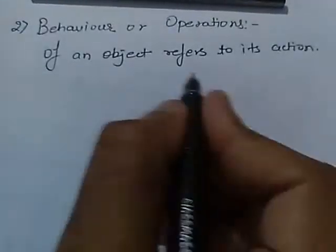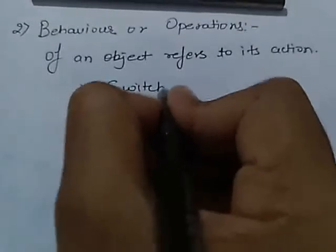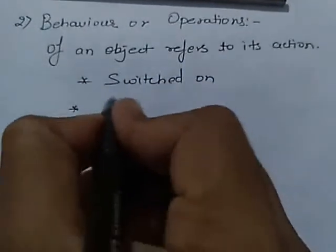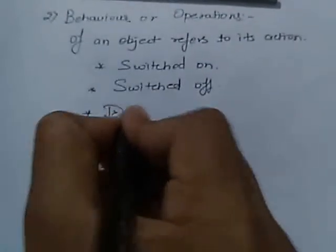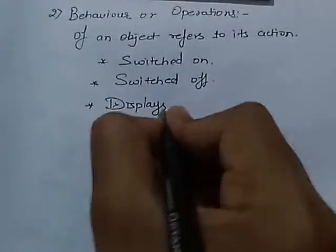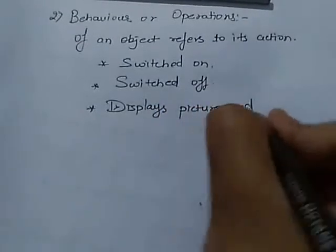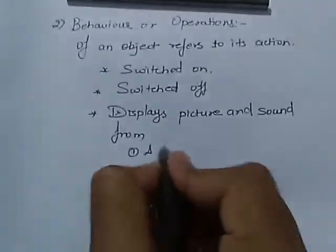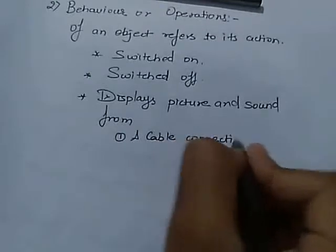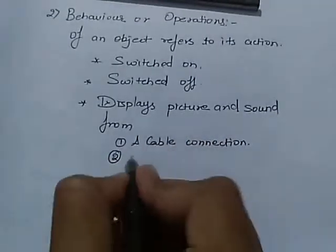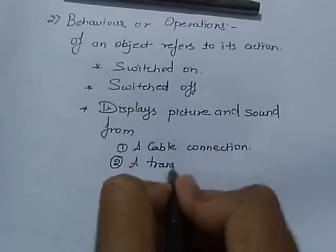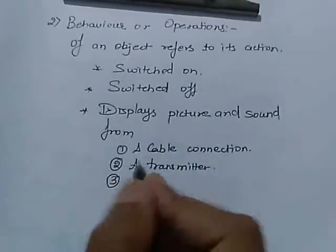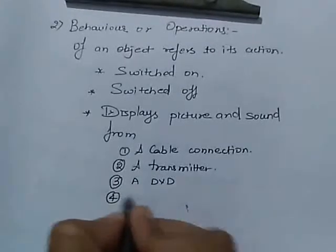For example, we can say that a TV can have or behave in any one of the following manners. It can be switched on. It can be switched off. With the help of this, we can display picture and sound from a cable connection, from a transmitter, from a DVD, or from a VCR.